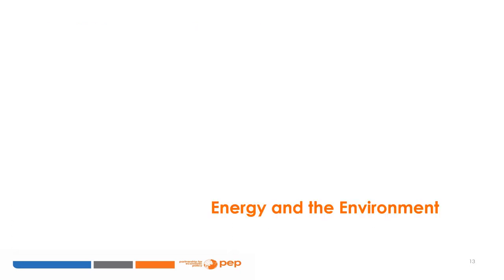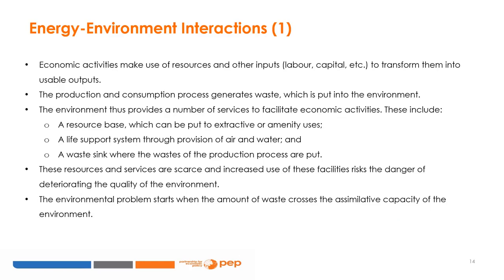So far we have considered various basic aspects of environmental economics, climate change, and mitigation. But we did not consider one important aspect directly: the effect of the energy sector on the environment. This session presents an overview of the energy-environment interactions and introduces the economic instruments for dealing with such problems. Economic activities make use of resources and inputs such as labour and capital to transform them into usable outputs. The production and consumption process generates waste, which is put into the environment.